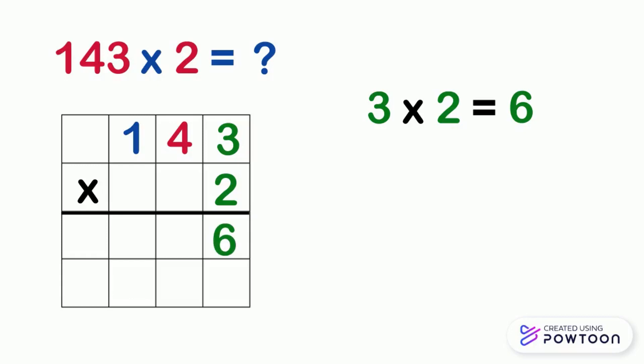Now we are going to multiply 2 by the 10's digit, which is 4. 2 times 4 equals 8. Similarly, we will write 8 in the answer box in the 10's place column.